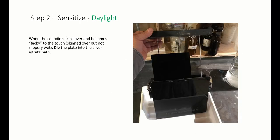Step 2: Sensitize. When the collodion skins over and becomes tacky to the touch—skinned over but not slippery wet—dip the plate into the silver nitrate bath. Immerse the plate smoothly, steadily, and with intent. Close the cover on the dip tank and wait for about 3 minutes.